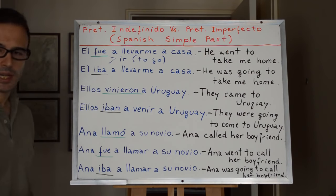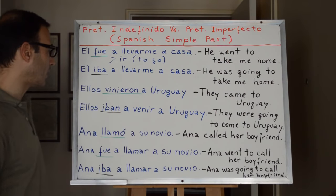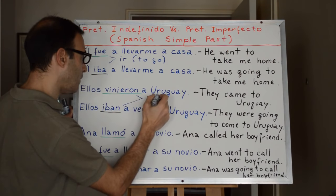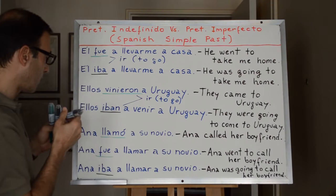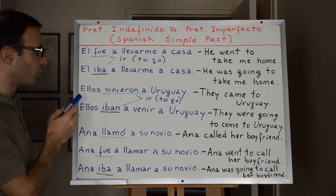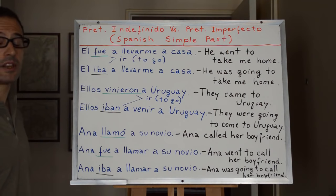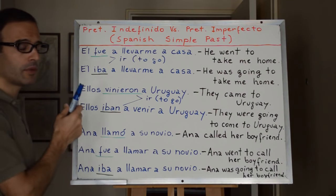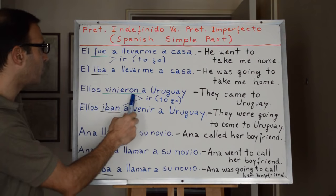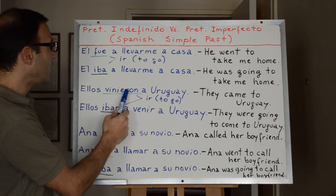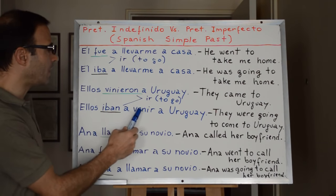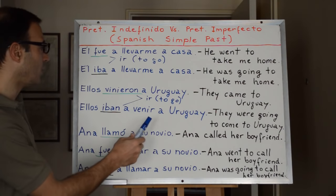Let's see another example. Ellos vinieron a Uruguay. Again we are using the verb ir, which means to go. This time the subject is ellos, which means they — it's the third person in the plural, while in the first example it's the third person in the singular. Therefore the verb is conjugated in the plural. Ellos vinieron a Uruguay: they came to Uruguay. Ellos iban a venir a Uruguay: they were going to come to Uruguay.